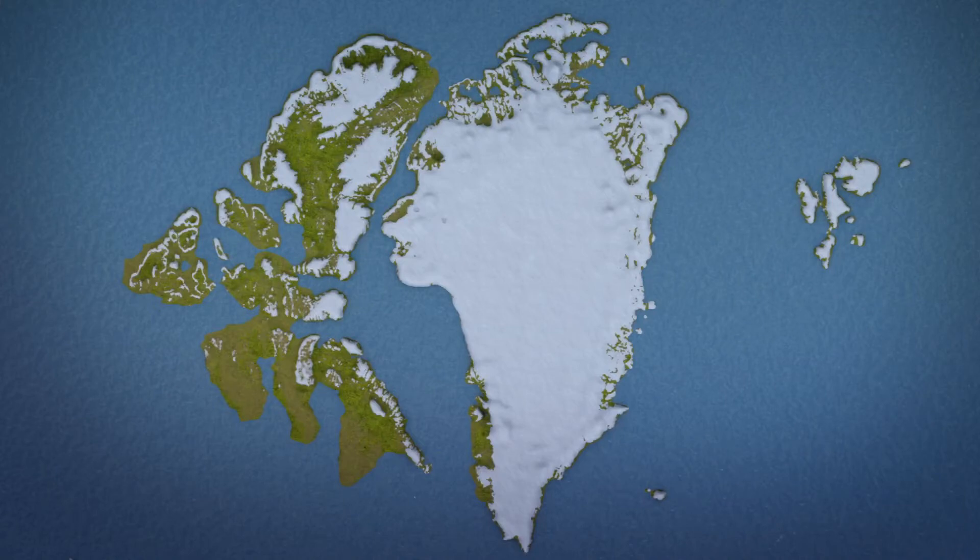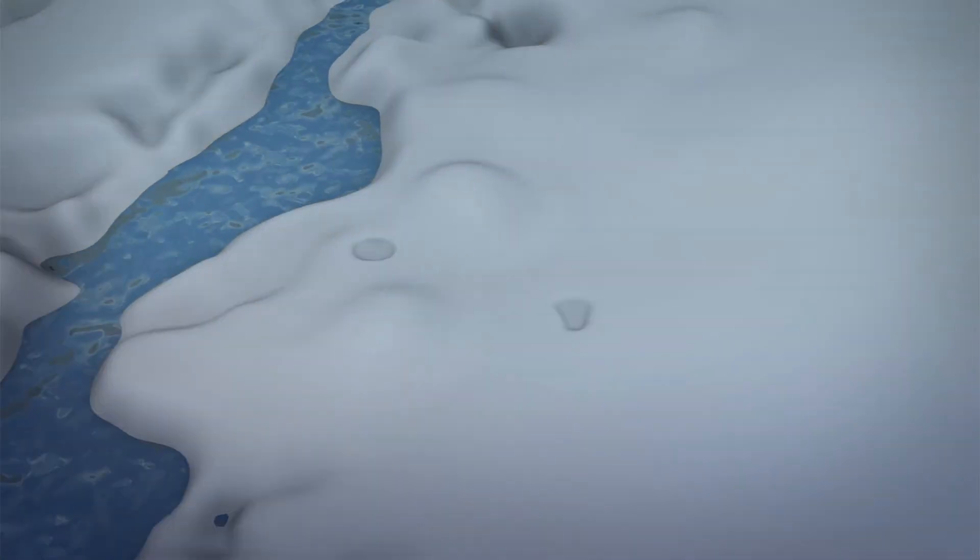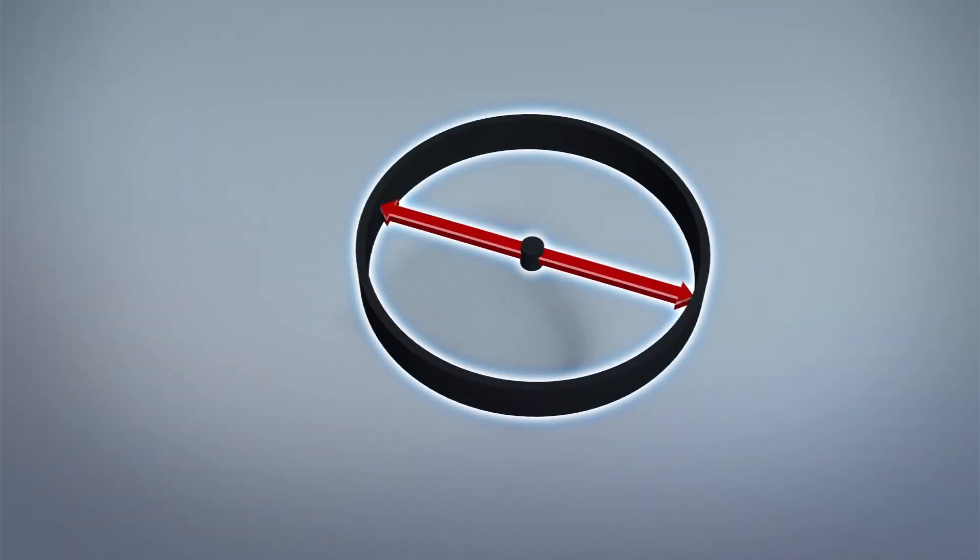NASA announced on Monday that researchers have discovered what may be another massive crater below Greenland's ice sheets. According to Space.com, the suspected crater is around 22 miles or 36 kilometers wide, but has not been definitively identified yet as an impact crater.